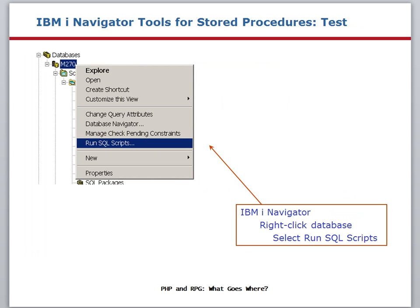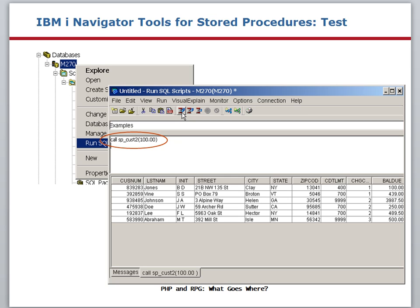As soon as you create a stored procedure, you can go back to the IBM i Navigator and test it. In the Databases section, right-click the database name and select the Run SQL Scripts option. The Run SQL Scripts dialog is displayed. Enter a call statement to call the stored procedure, including a parameter value. When you click the Run icon, the stored procedure is called and the results are displayed. If you get the expected results, great — you can hook up the call to the stored procedure in the PHP application. If you do not get the expected results, you can modify the stored procedure, still within the IBM i Navigator environment.